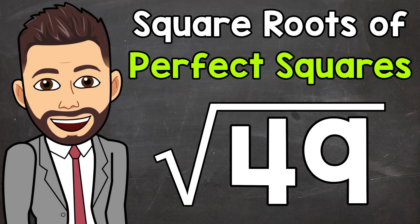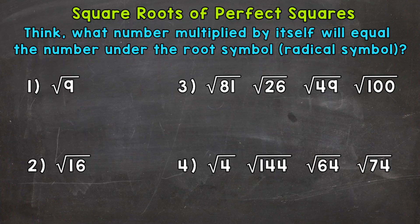Welcome to Math with Mr. J. In this video, I'm going to cover how to find the square root of a perfect square. These square roots are going to work out nicely and give us clean-cut whole number answers. When finding square roots, we need to think about what number multiplied by itself gives us the number under the square root symbol. Let's jump into our examples and get a better understanding of square roots.